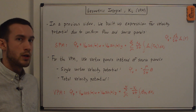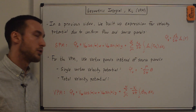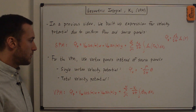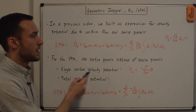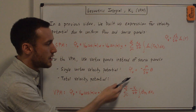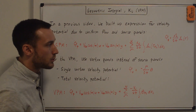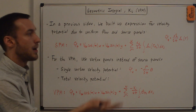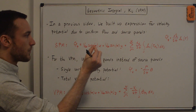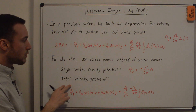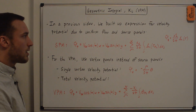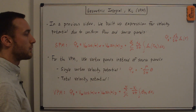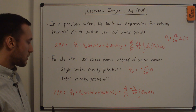For the vortex panel method we want to use vortex panels instead of source panels to build up the airfoil geometry. From the elementary flow videos, a single vortex velocity potential phi_v equals negative capital Gamma over 2 pi times theta, where theta is the angle from the positive x-axis to the point where we're computing the induced velocity potential. To create the total velocity potential for the vortex panel method, we substitute this vortex flow into the more complex expression.